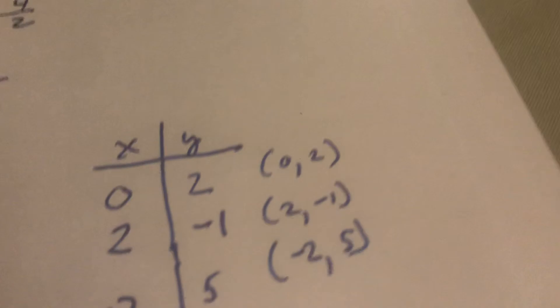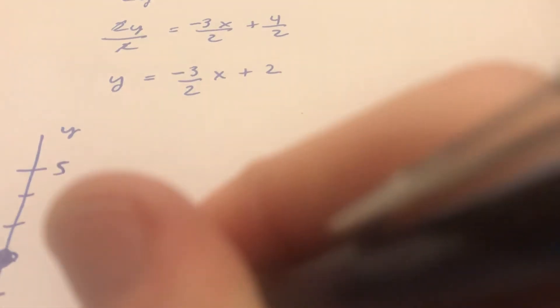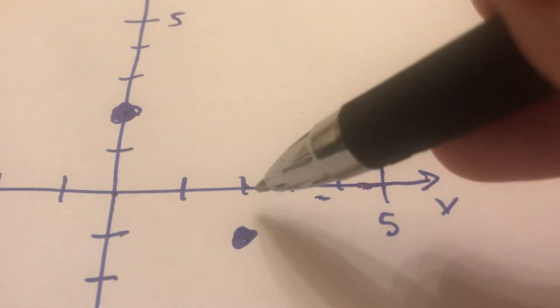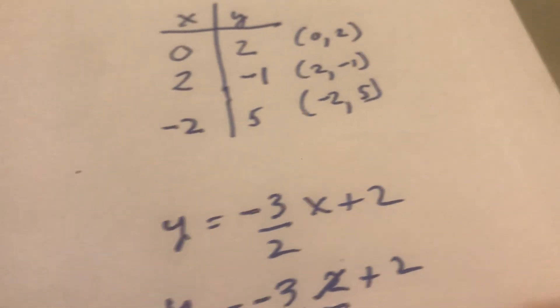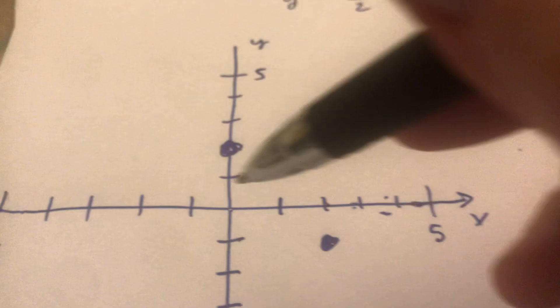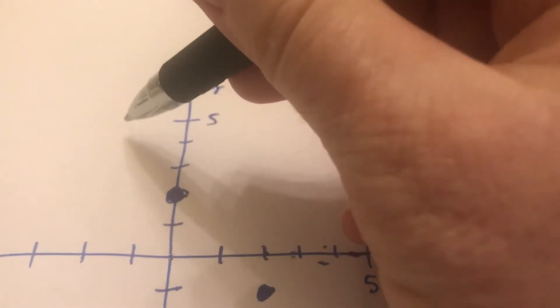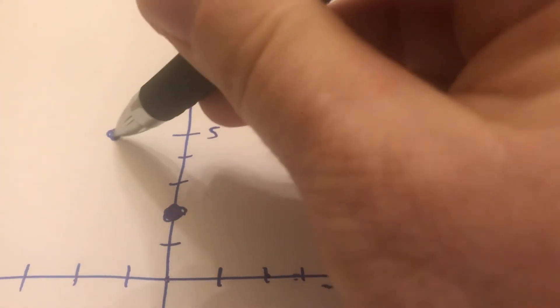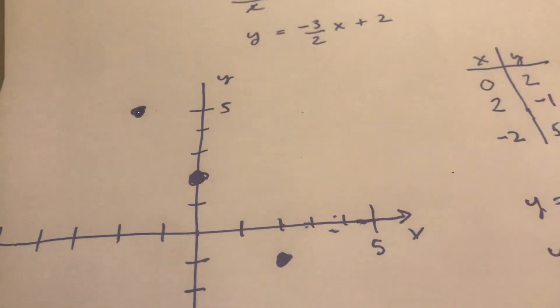Back to the origin. 2 negative 1. So it means 2 to the right and then down 1. So I went 2 to the right and then down 1. The last point is negative 2, 5. So I go back to the origin. I let x equal negative 2 so I go 2 to the left and then I go up 5. So those are my three points and you can see they fit on the line.